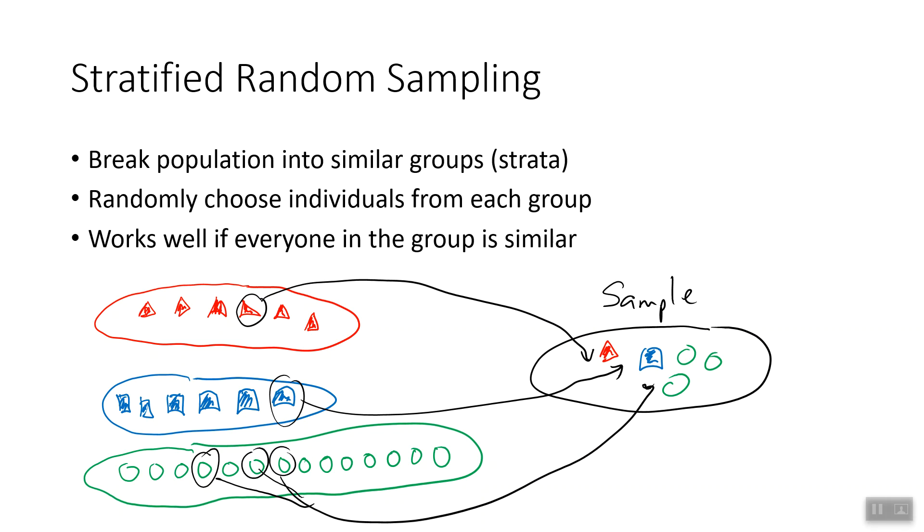In stratified random sampling, what we do is we break the population into similar groups or into strata. It's kind of like the geological thing where you've got stratified rock with layers on top of each other. The idea is you're breaking your population into layers, into groups that are roughly similar, and then you randomly choose individuals from each group.